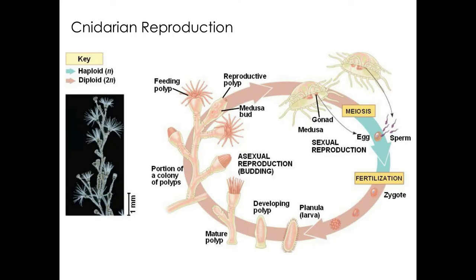Cnidarians can reproduce both sexually and asexually. This example shows the life cycle of a hydrozoan. Asexual reproduction happens through budding of the polyp, while sexual reproduction involves the release of gametes during the medusa stage of the life cycle. The zygote that results from sexual reproduction then develops into a polyp.